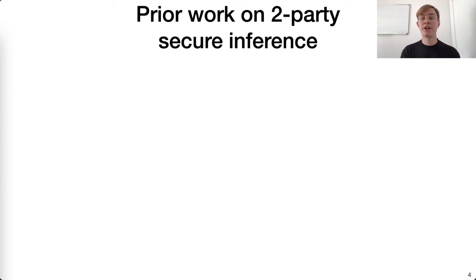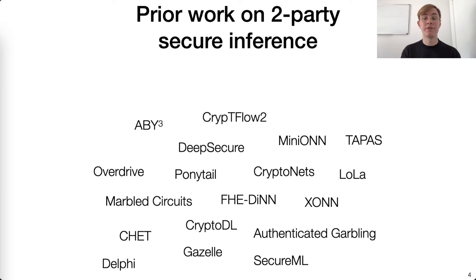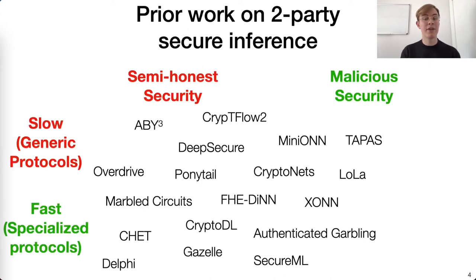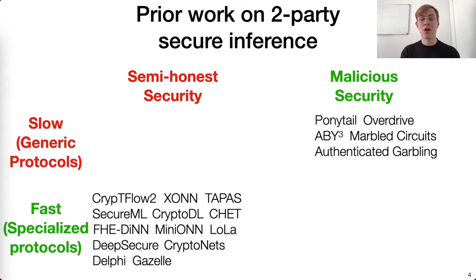Many works over the last few years have designed two-party secure inference protocols using a variety of techniques. Let's sort these protocols by both their threat model and their protocol type. Keep in mind that malicious security is a stronger threat model than semi-honest security, and specialized protocols are going to be orders of magnitude faster than generic ones. After sorting, we notice that all of the specialized inference protocols only obtain semi-honest security, while the maliciously secure ones are all slower, generic protocols. Ideally, we would like an efficient protocol which obtains malicious security, but designing such a protocol is incredibly difficult.